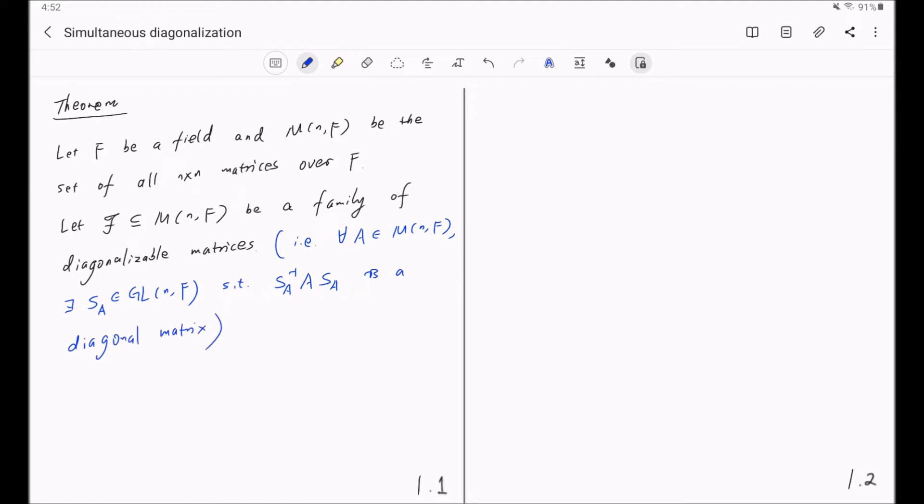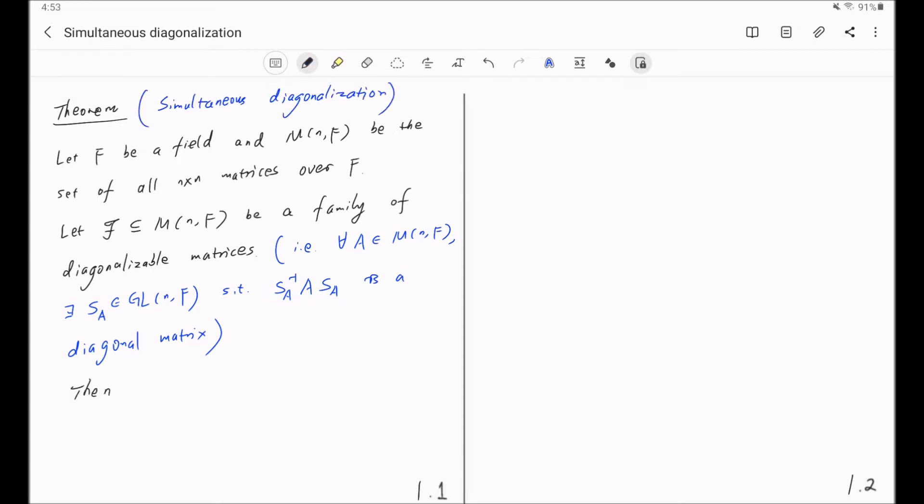The theorem of simultaneous diagonalization states that this family F is a commuting family. Namely, AB is equal to BA for any AB in F, if and only if F is a simultaneous diagonalizable family.